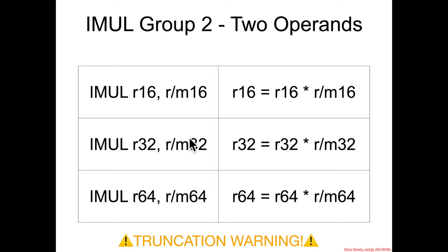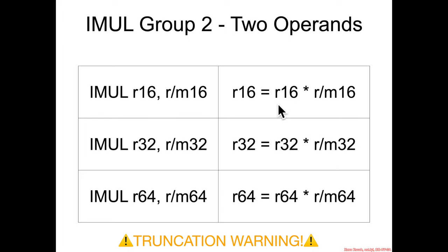The two-operand form uses 16-bit times 16-bit stored back into a 16-bit value, which can obviously lead to truncation since multiplying two values can exceed the maximum space in 16 bits. Similarly, 32 times 32 into 32, and 64 times 64 into 64 — so these can all cause truncation.